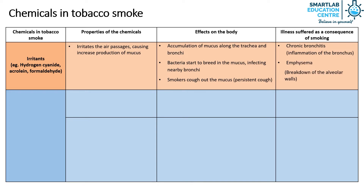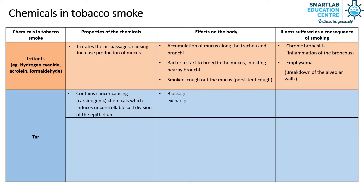The last chemical found in tobacco smoke is tar. Tar contains cancer-causing chemicals, which induce uncontrollable cell division of the epithelium. This causes blockage in the air sacs and reduction in gas exchange efficiency. As a result, this can lead to cancer of the respiratory tract.